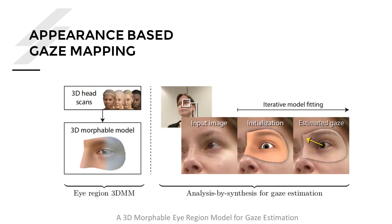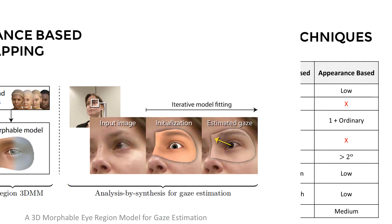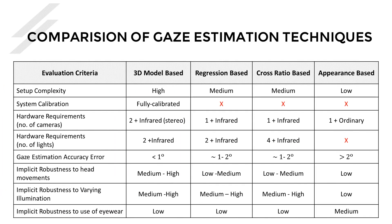Another class of algorithms is called appearance-based. Here the objective is to recreate a patch of the eye using something like a 3D morphable model for the eye region, then use this synthesized model to estimate gaze. In feature-based methods we extract features; in appearance-based models we try to recreate the appearance of the eye. There is a trade-off between system complexity and accuracy: 3D model-based systems are most accurate but require more calibration and hardware, while appearance-based models are lowest in both accuracy and setup complexity.